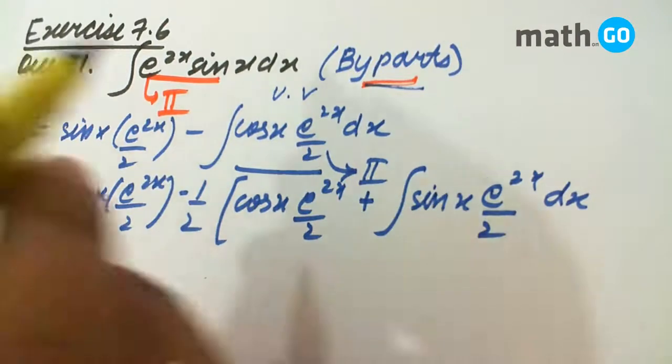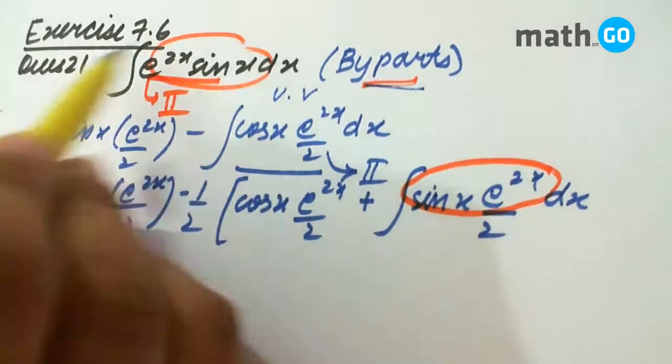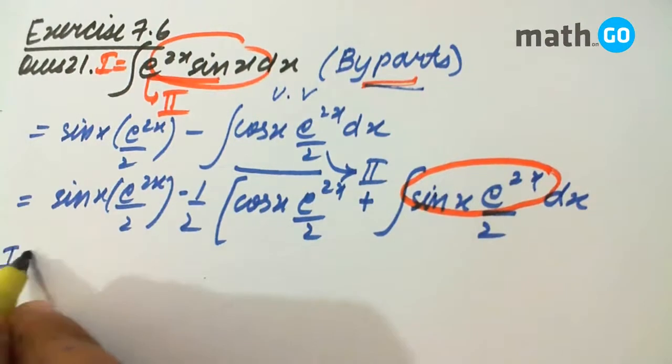The most important thing is we can see this is nothing but the original integral, that is equal to I. So solving it further, we have I equals to...